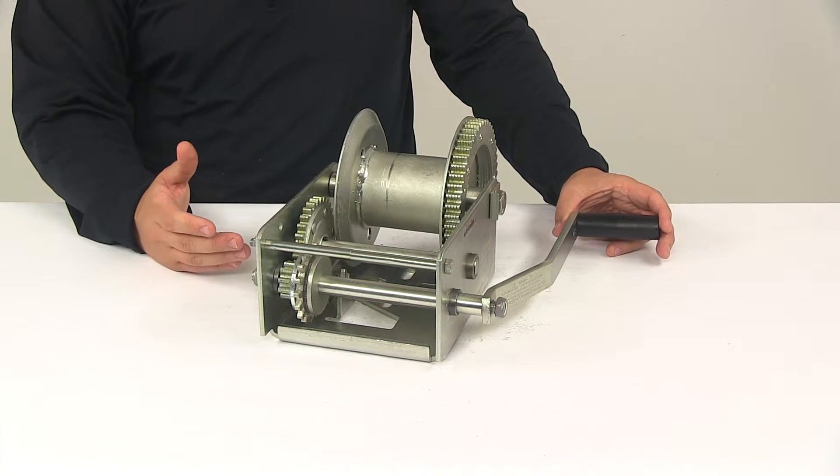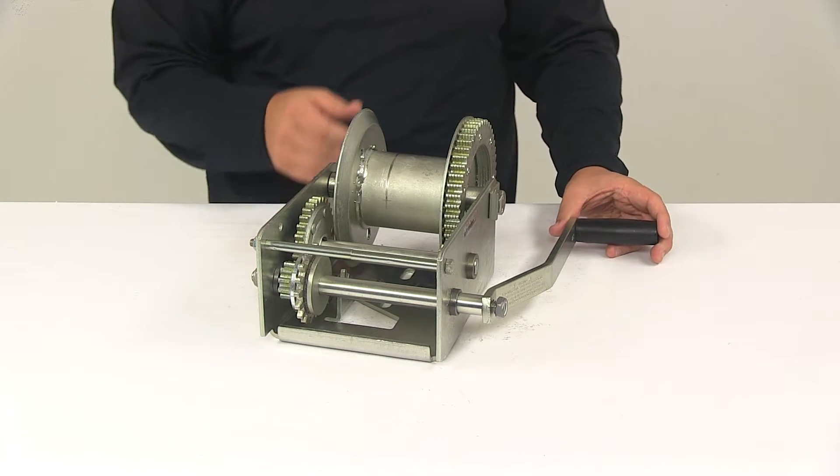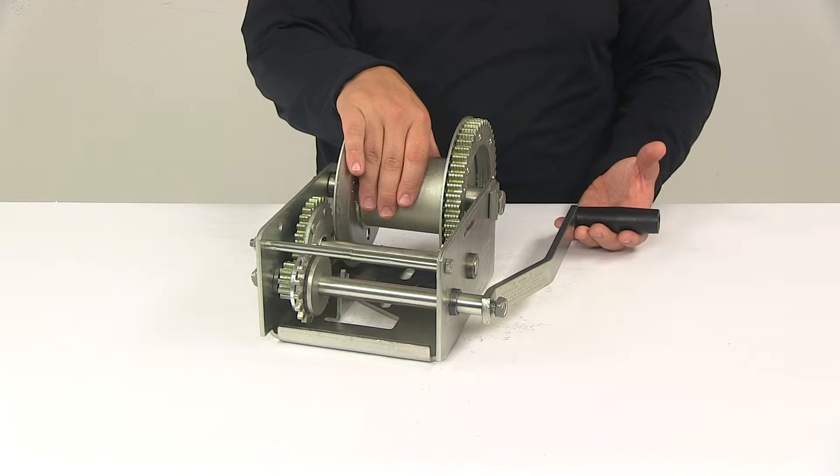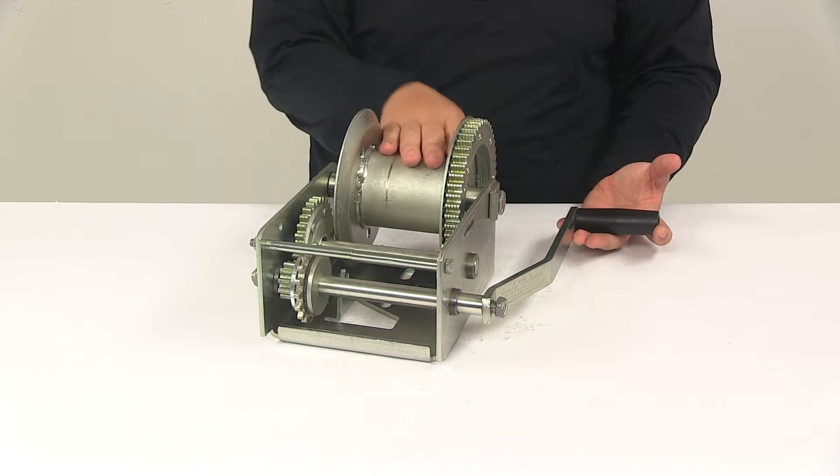When it comes to capacity, there are two different capacities: first layer capacity and full drum capacity. First layer capacity is twenty five hundred pounds. Full drum capacity of this winch is fifteen hundred pounds.